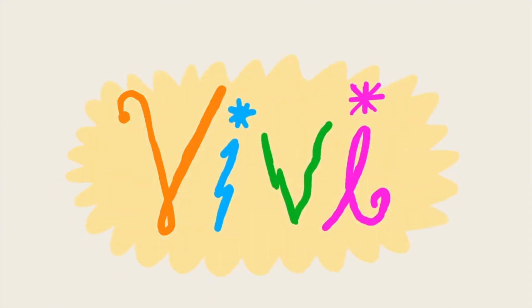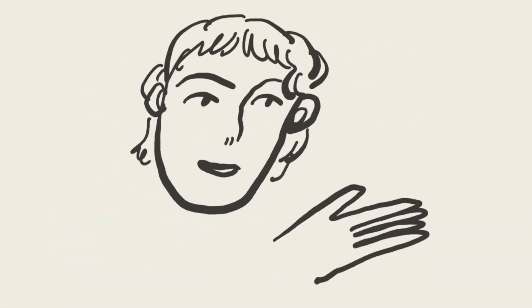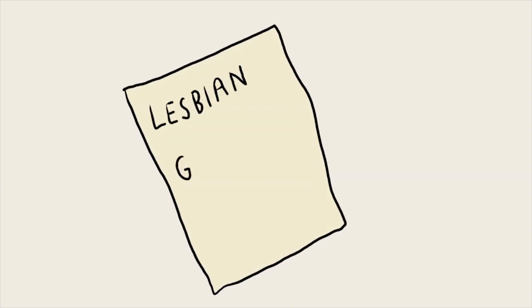I'm Vivi. I'm 14 years old. I live in Lexington, Kentucky, and I don't really think I've found a label that really works for me.